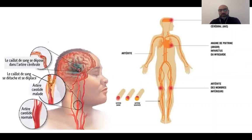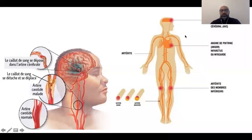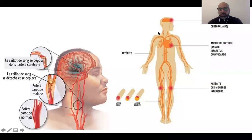Que sont les maladies cardiovasculaires ? Le cœur a différentes parties anatomiques : le muscle, les valves, les vaisseaux qui irriguent ce muscle. Ces vaisseaux — les artères — vont également irriguer le cerveau, les membres inférieurs, les reins. C'est toute la maladie artérielle qui va entraîner des maladies cardiovasculaires aboutissant malheureusement au décès ou à des complications très importantes pour nos patients.